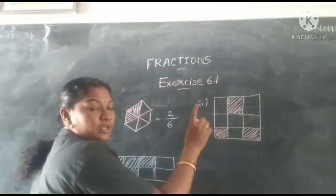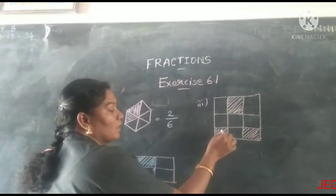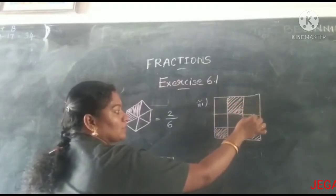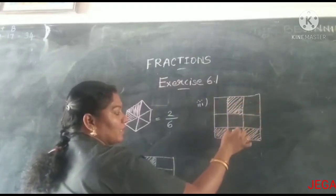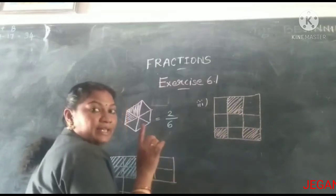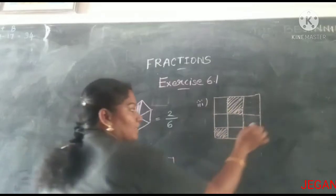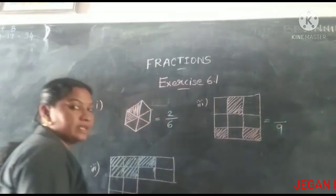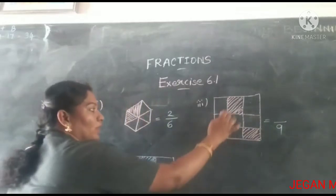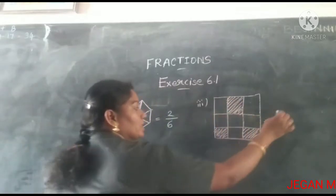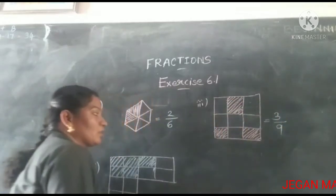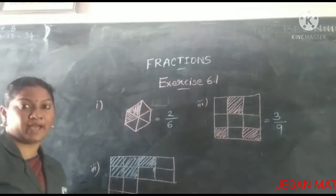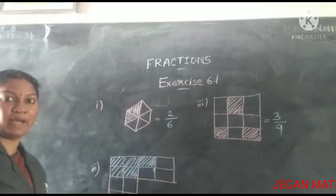Next figure: count the equal parts: 1, 2, 3, 4, 5, 6, 7, 8, 9 — so 9 equal parts, denominator is 9. Count the shaded parts: 1, 2, 3. So the fraction of this shaded part is 3 by 9.